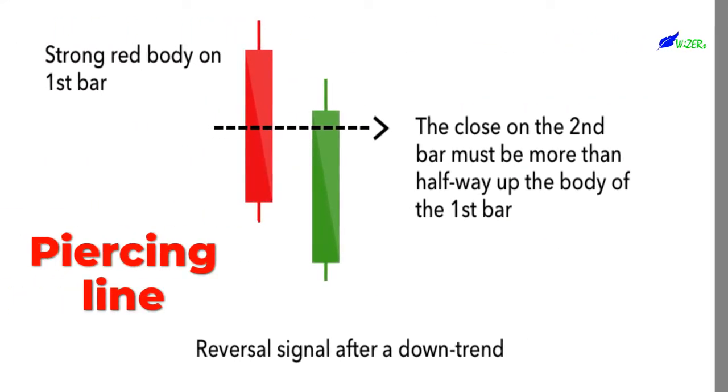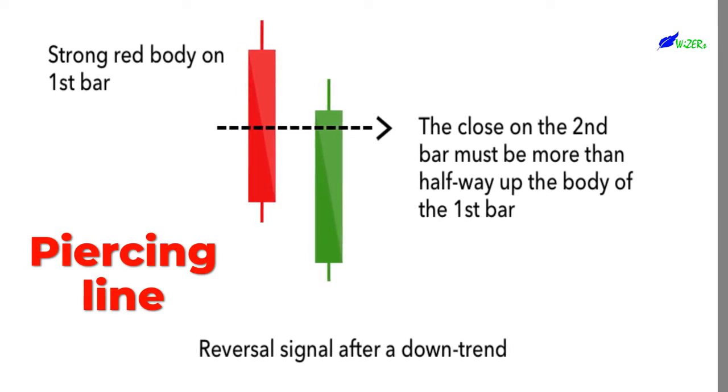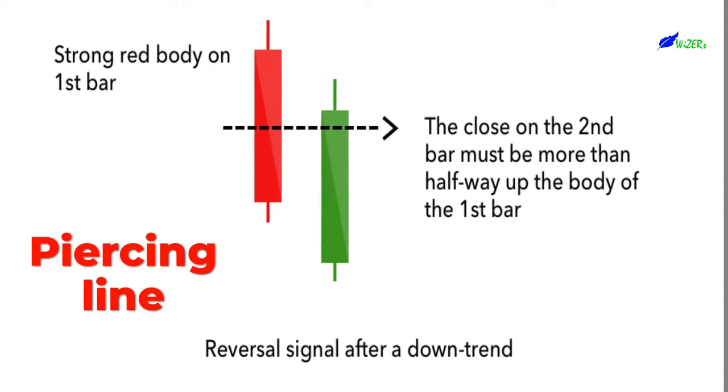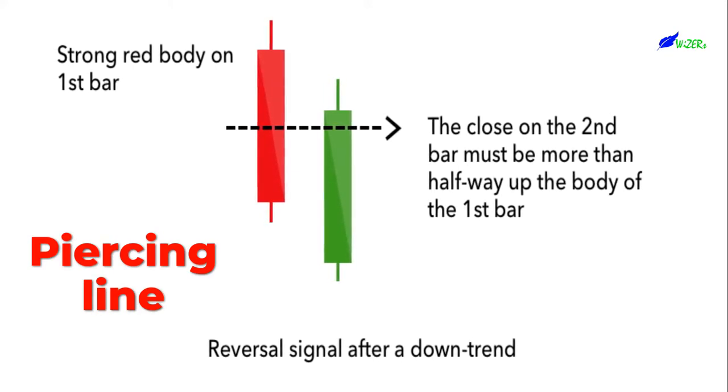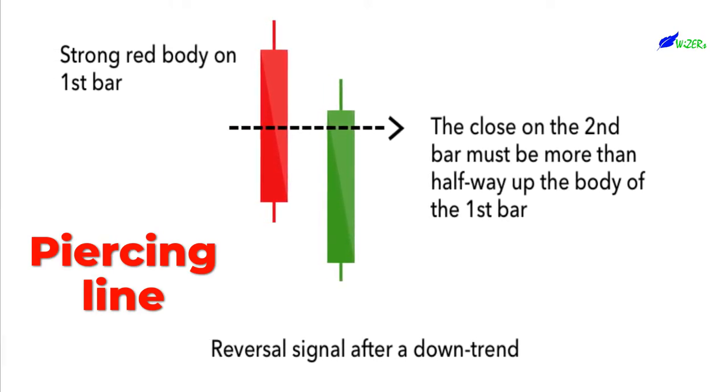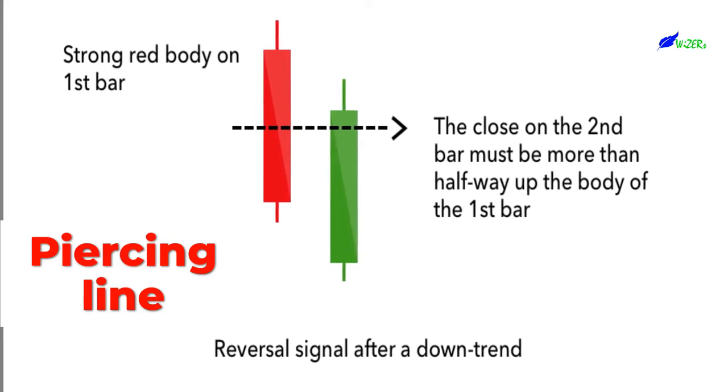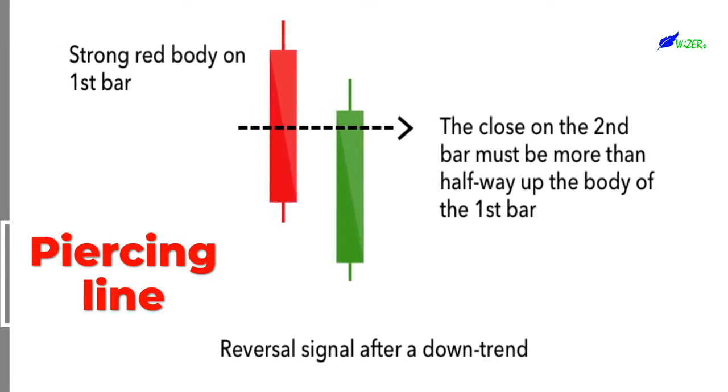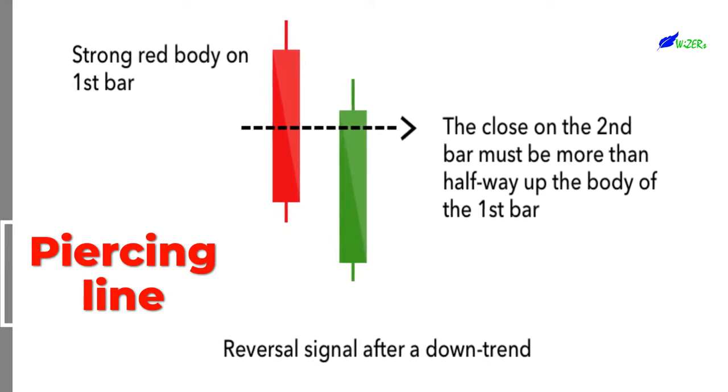The piercing line is also a two-stick pattern, made up of a long red candle, followed by a long green candle. There is usually a significant gap down between the first candlestick's closing price and the green candlestick's opening. It indicates a strong buying pressure, as the price is pushed up to or above the mid-price of the previous day.